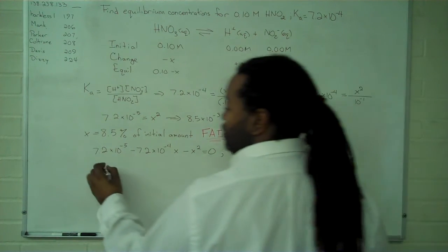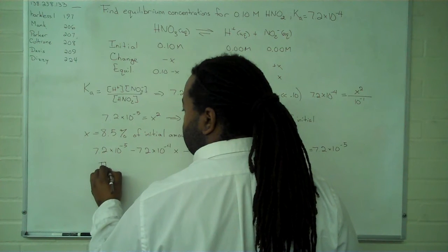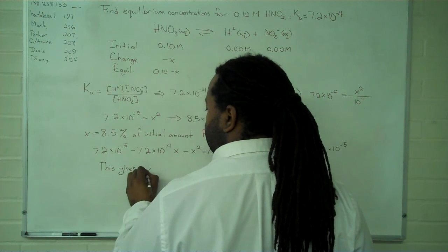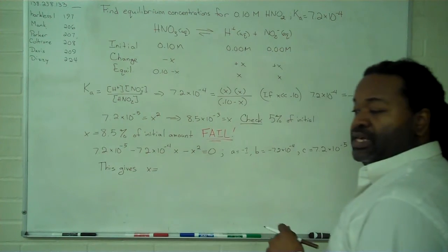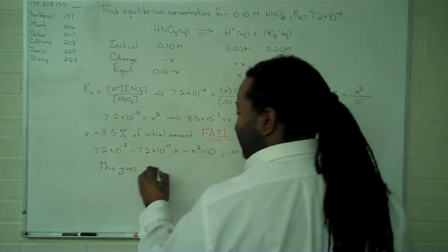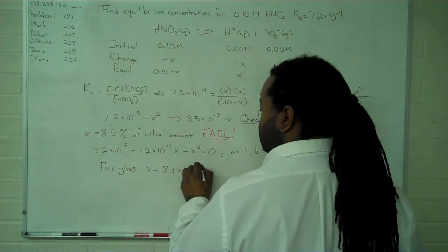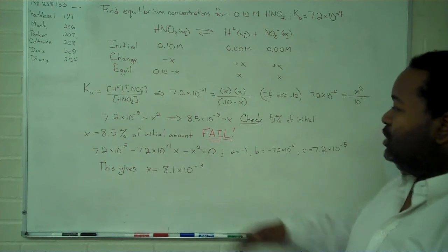Now, with these values we find values for x, and the one that actually works is 8.1 times 10 to the negative 3.